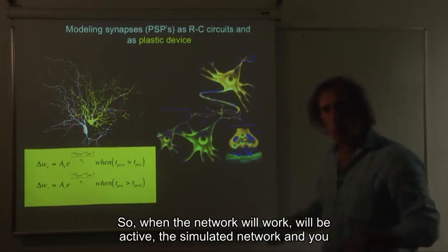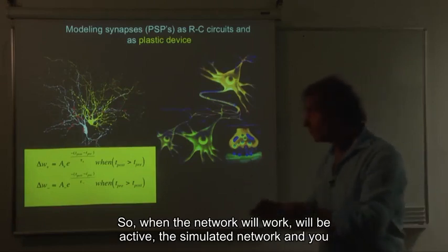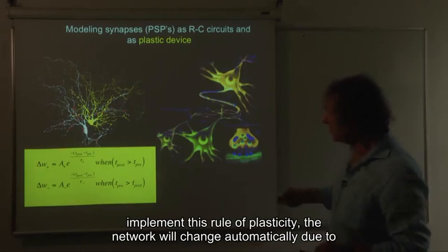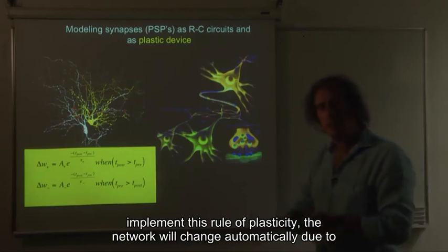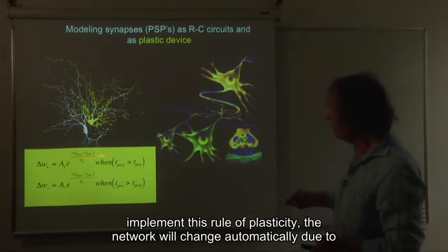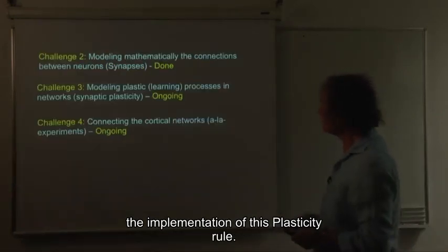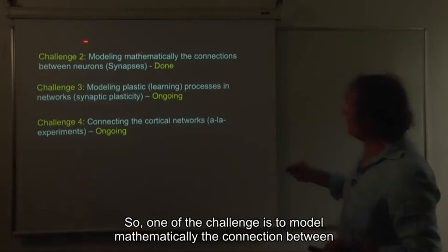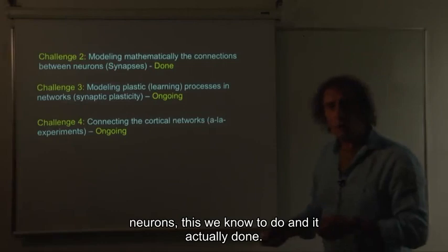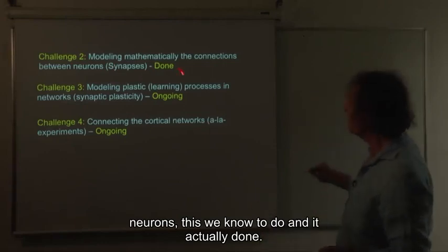This is an equation describing spike timing dependent plasticity. So when the network will work, will be active, the simulated network, and you implement this rule of plasticity, the network will change automatically due to the implementation of this plasticity rule. So one of the challenges is to model mathematically the connection between neurons. This we know to do, and it's actually done.